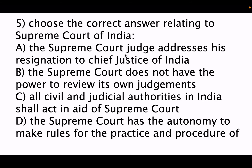Option A is wrong — the Supreme Court judge addresses his resignation letter to the President, not the Chief Justice. Option B is also wrong — the Supreme Court does have the power to review its own judgments. Option C is correct. Option D is wrong — the Supreme Court, with the approval of the President, can make rules for practice and procedure of court; it does not have full autonomy.